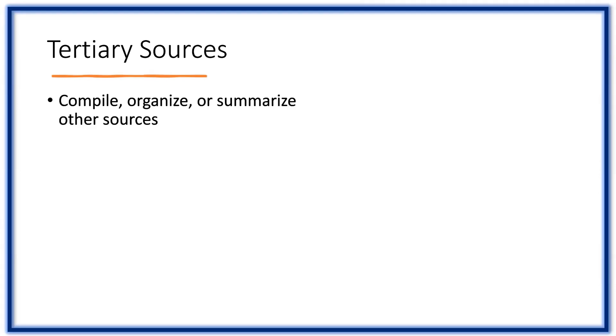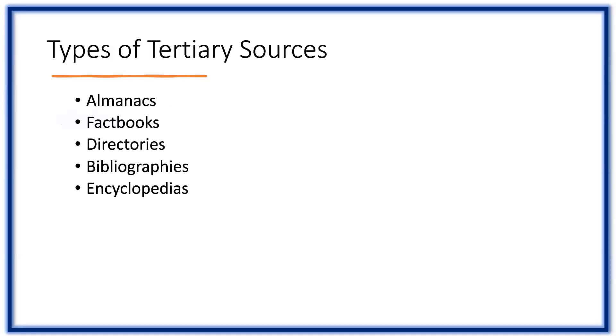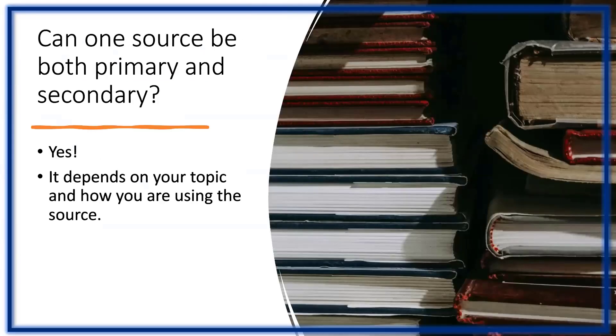Tertiary sources compile, organize, and summarize other sources. Tertiary sources include almanacs, fact books, directories, bibliographies, and encyclopedias.